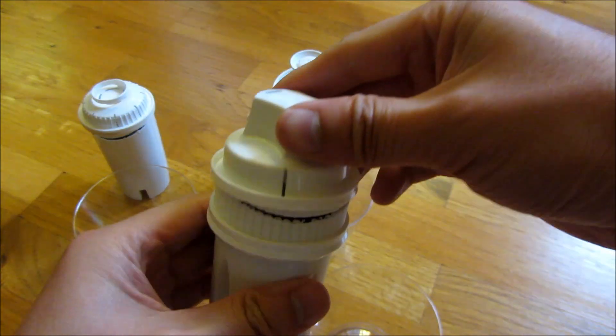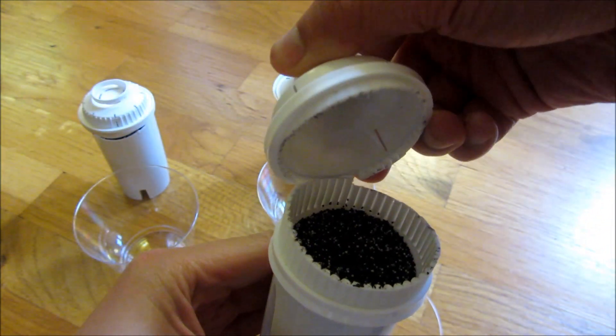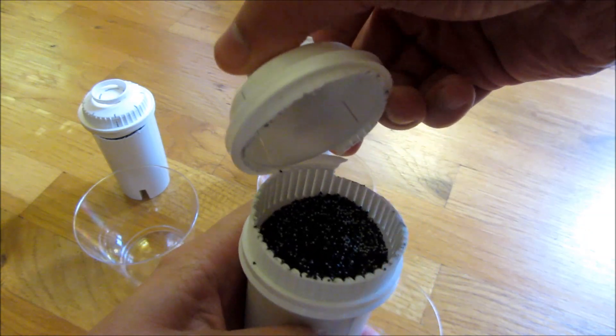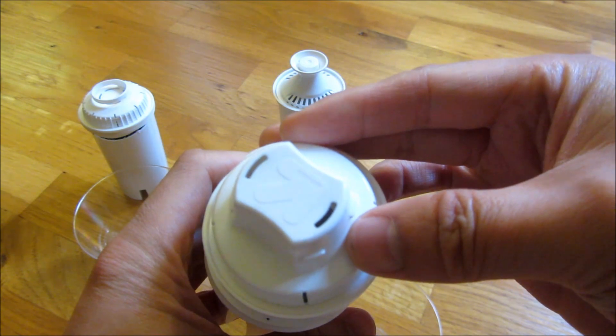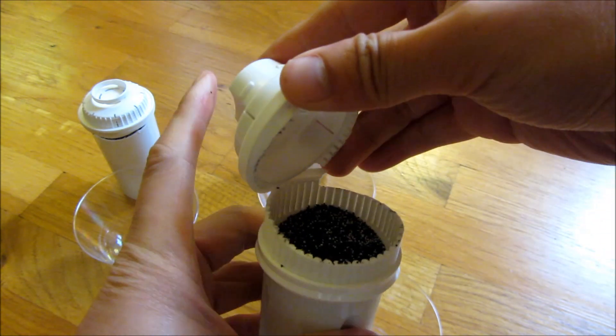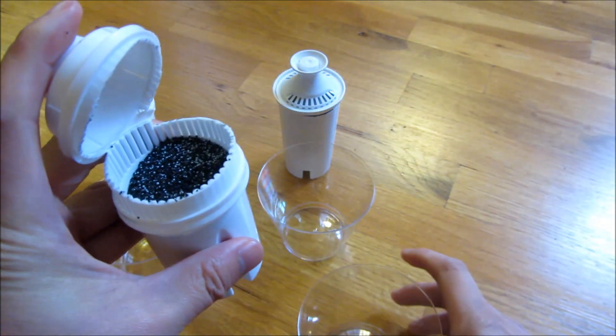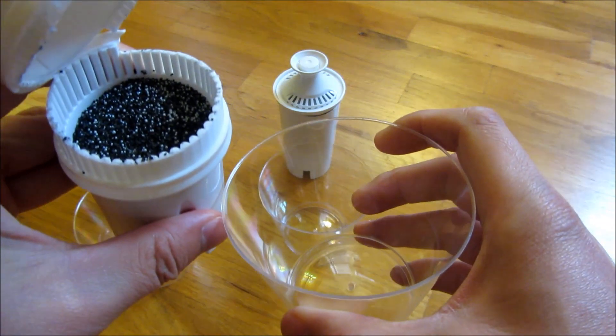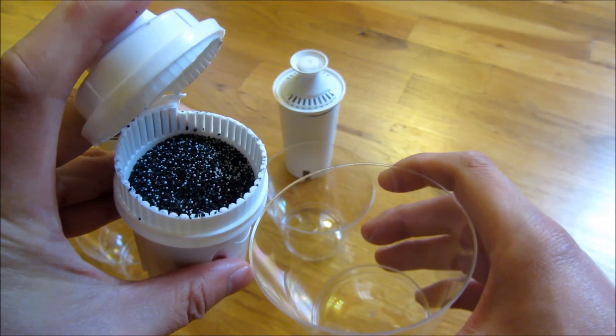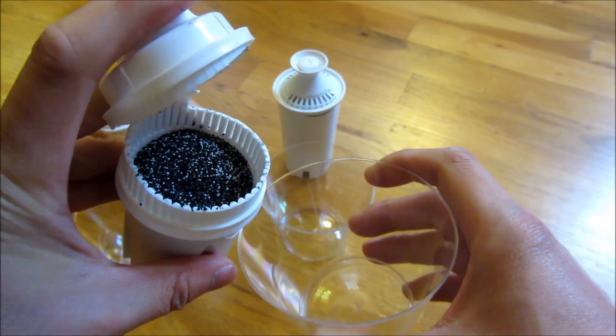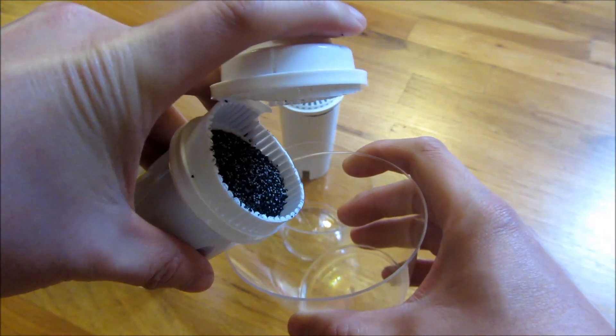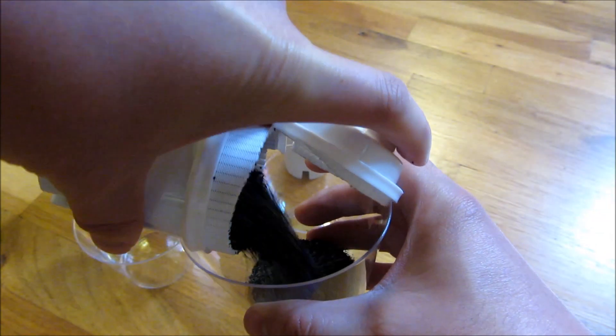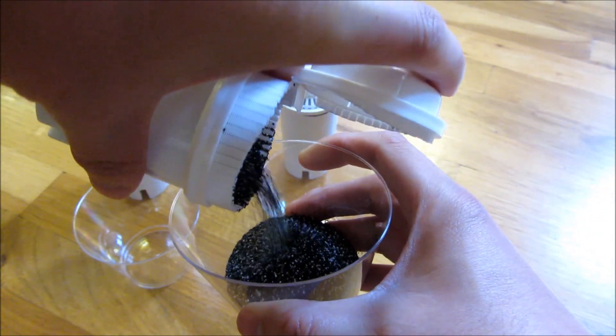So as you can see with this Target one, this particular one has a Target symbol up here. So this is the Target filter and I didn't lose any contents when I cut it open. So what you see here is exactly the amount of content that there is in the filter itself.